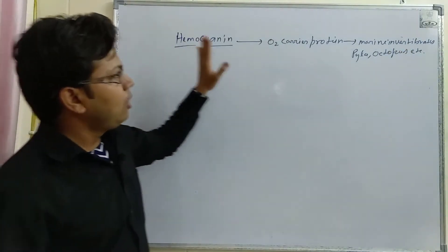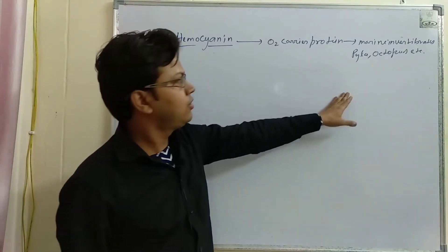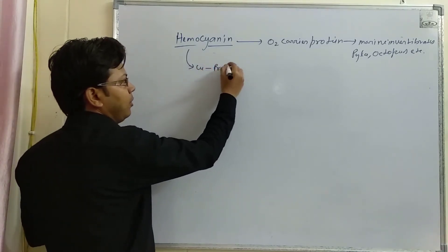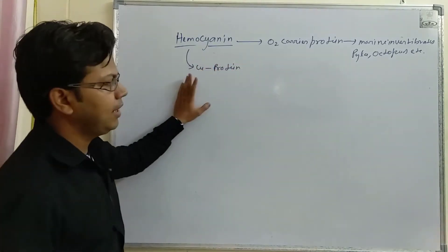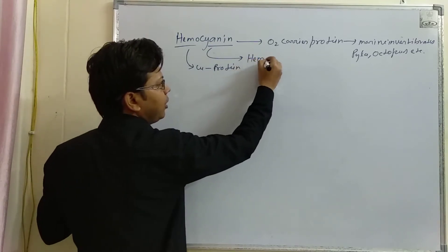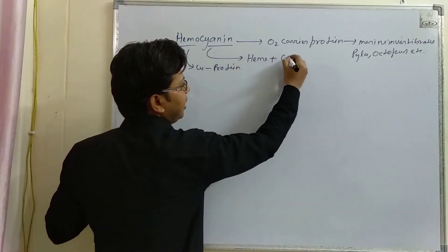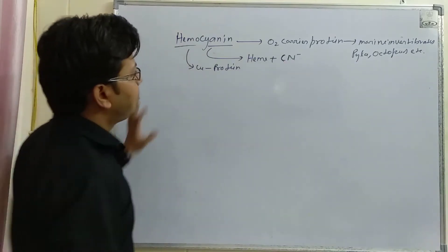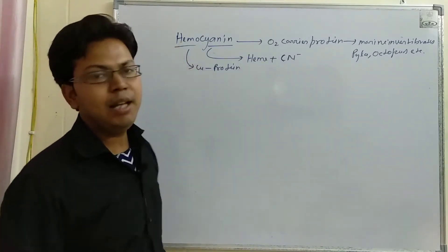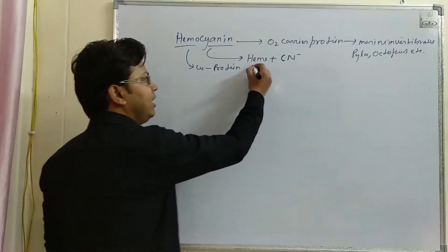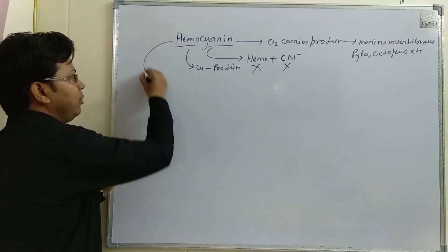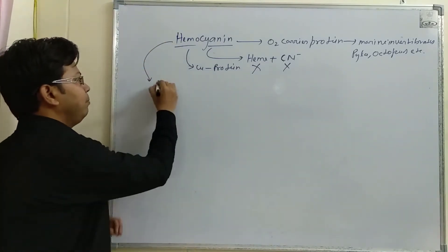Hemocyanin is a copper-containing protein. The name confusingly suggests the presence of a heme group and the cyanide ion, but the protein actually contains neither the heme group nor the cyanide ion.